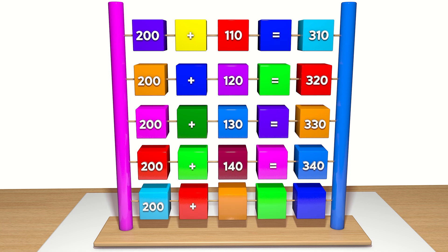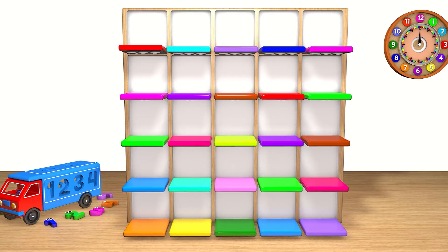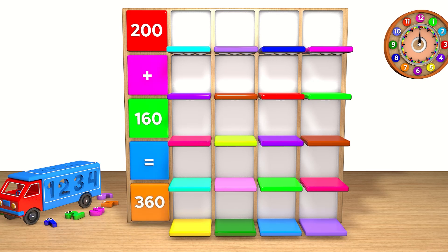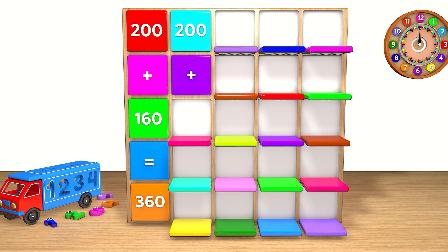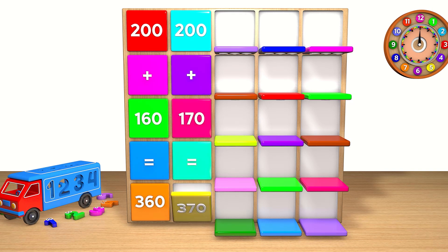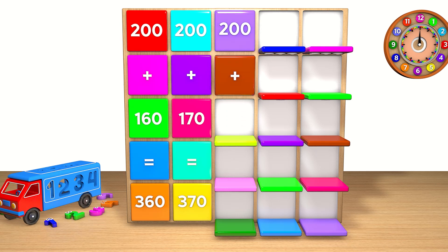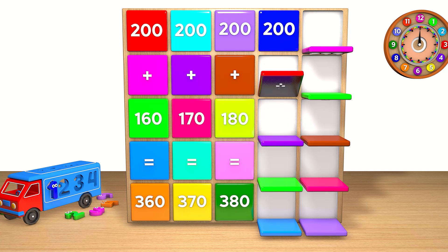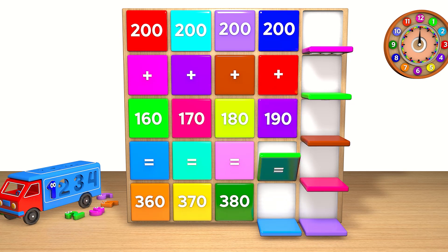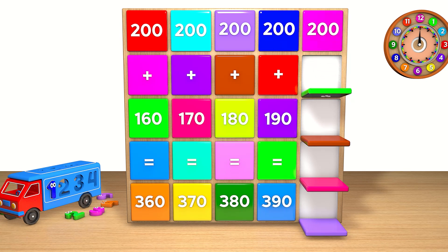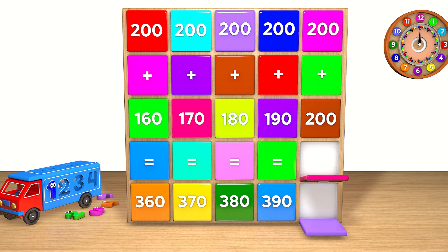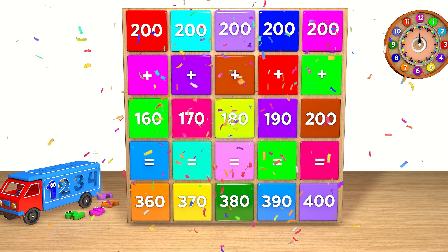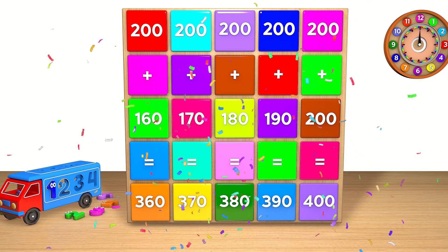200 plus 150 equals 350. 200 plus 160 equals 360. 200 plus 170 equals 370. 200 plus 180 equals 380. 200 plus 190 equals 390. 200 plus 200 equals 400.